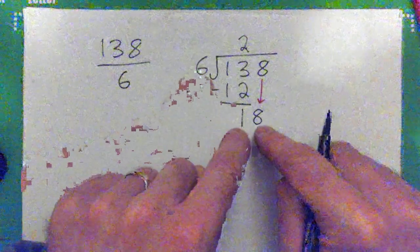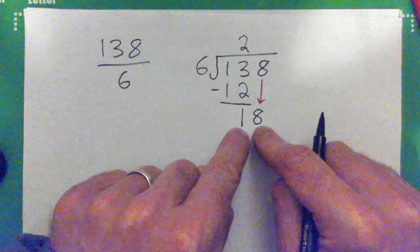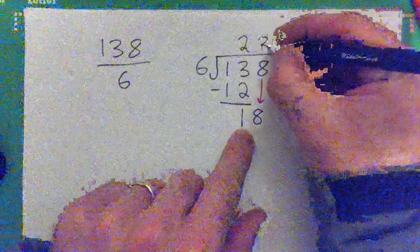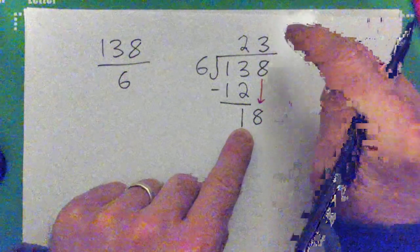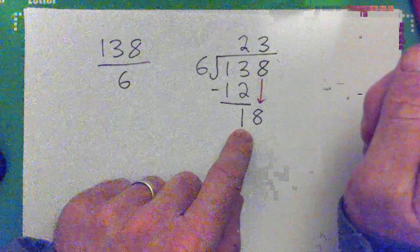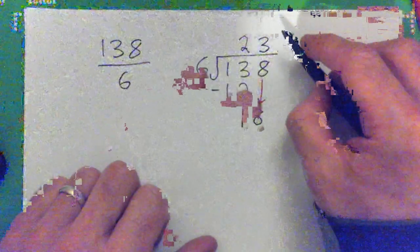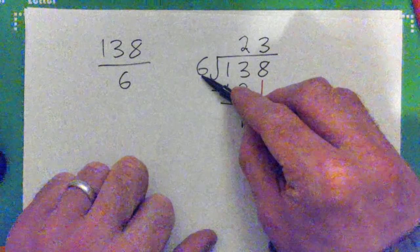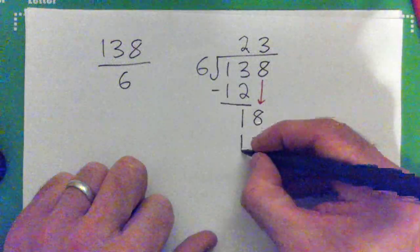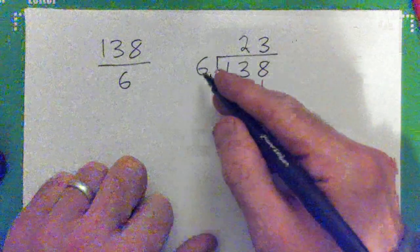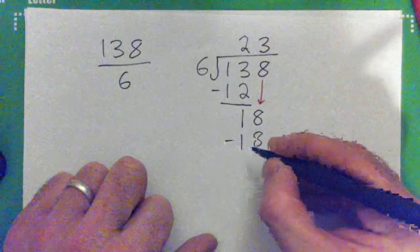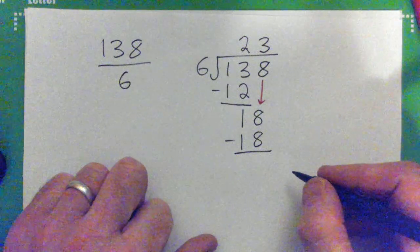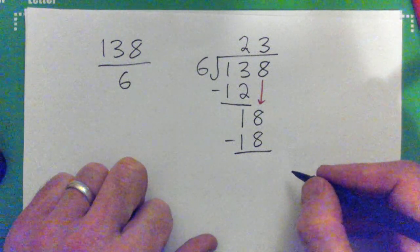6 into 18. Yeah, put the 3 up there, good. And then, you're still not done, because you have to make sure there's a, figure out if there's a remainder or not. 3 times 6. 18. 3 times 6 is 18. Write it there, and then subtract. 0.